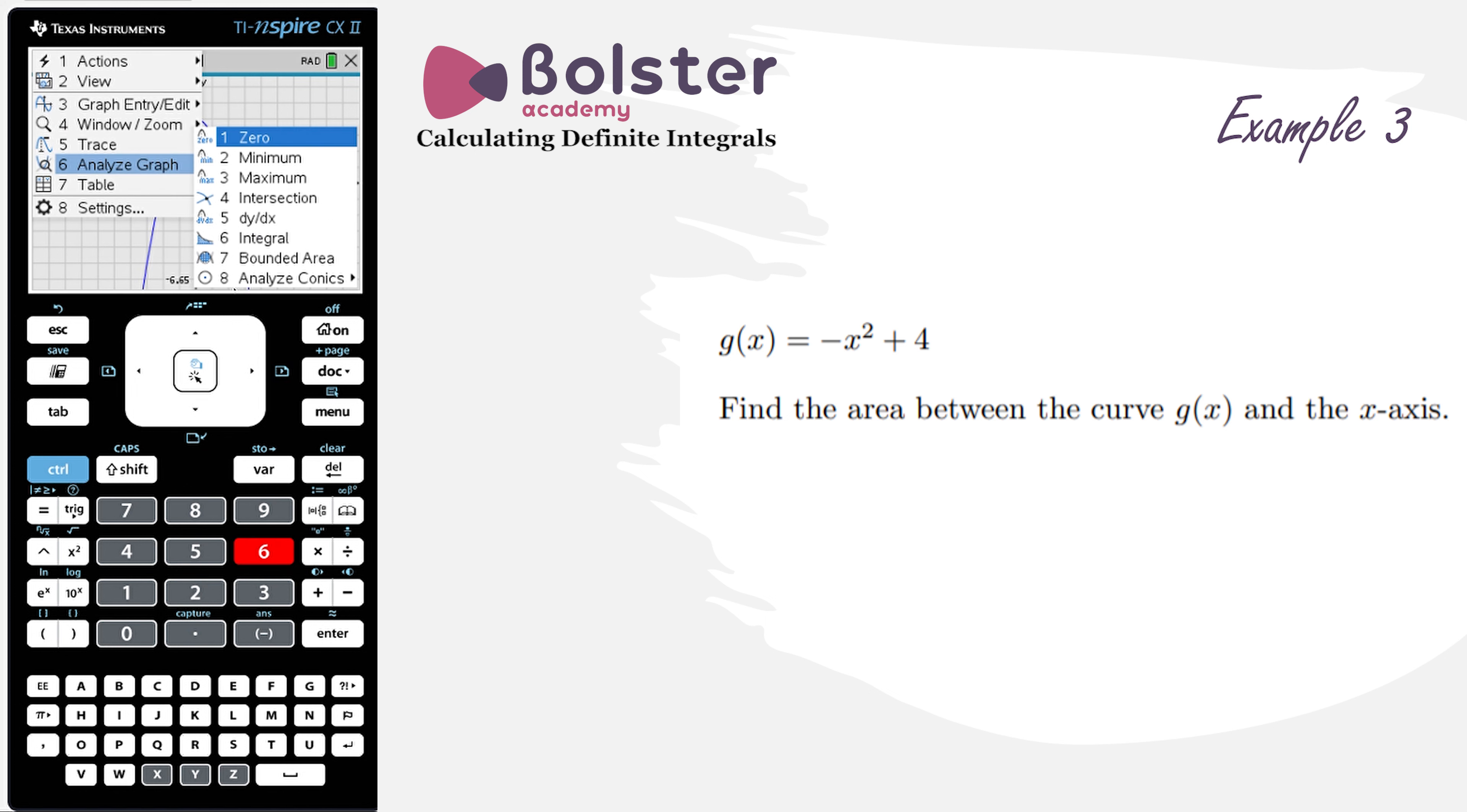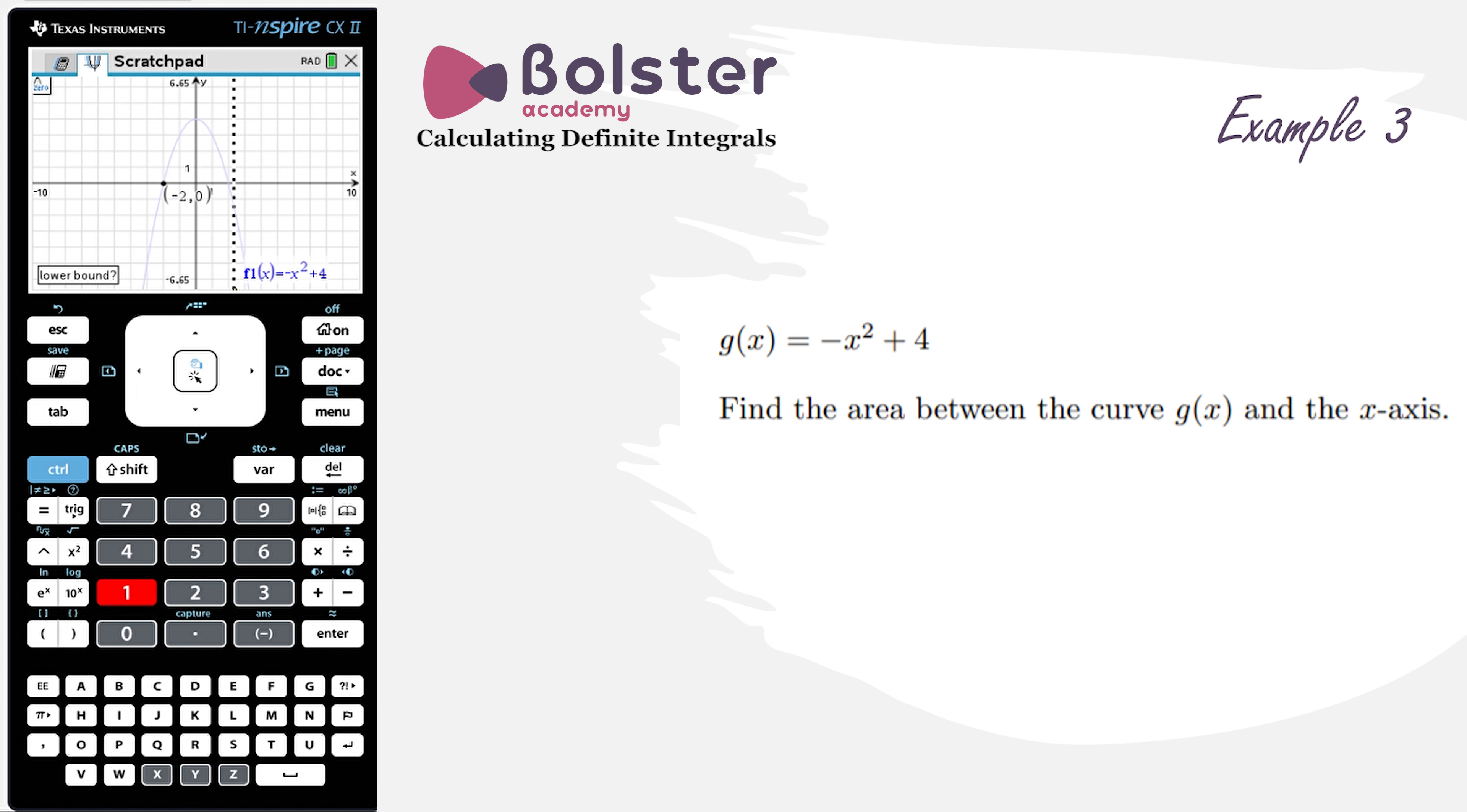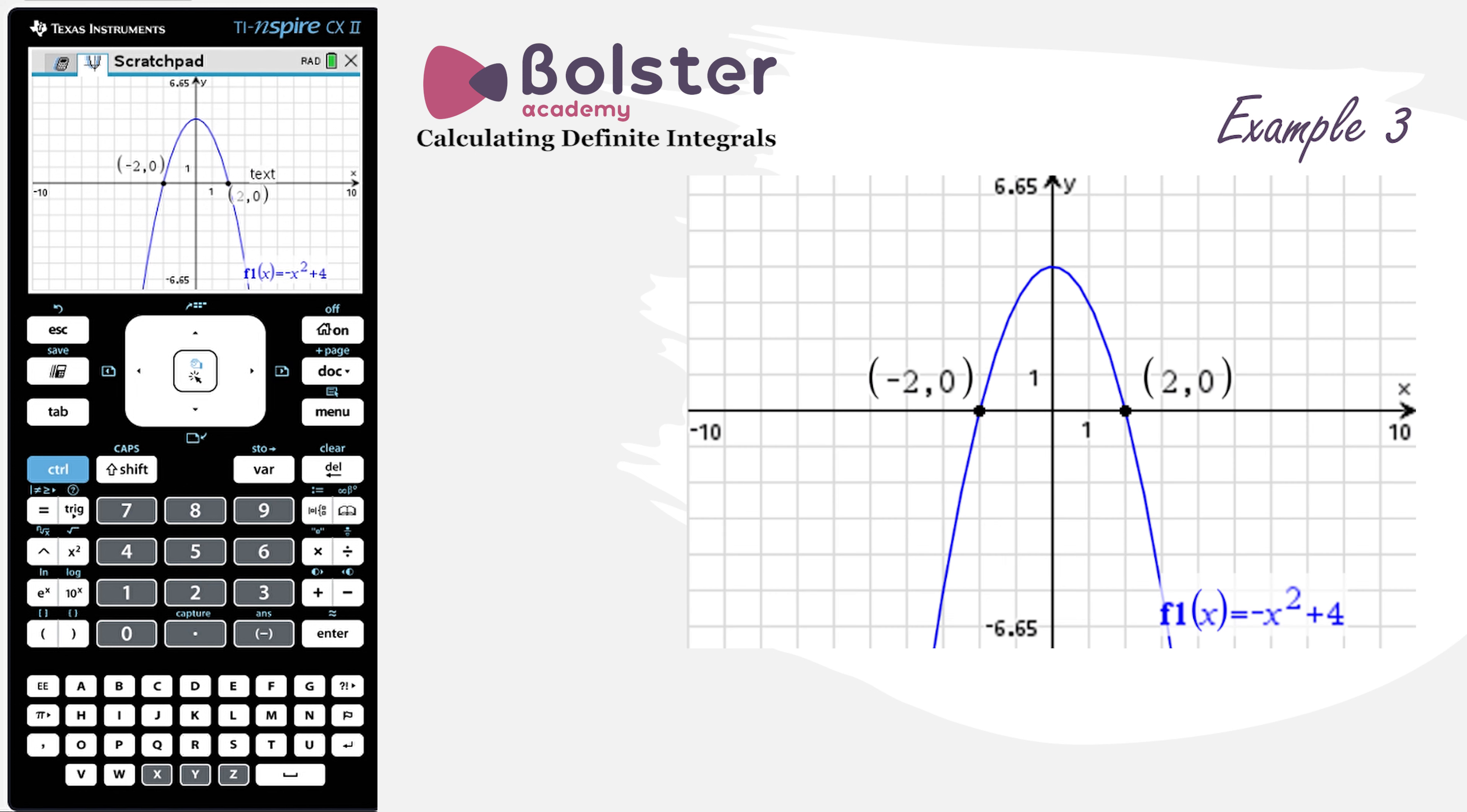I go in again, Analyze Graph, 0, I do my lower and my upper bounds, and I get my second zero at 2. So I can clearly see the graph is cutting at minus 2 and 2.